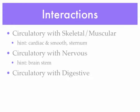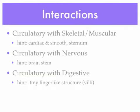Another interaction is the circulatory system with the digestive system — this should be a little bit of a review. Here's your hint: think about the tiny finger-like structures called villi. Capillaries surround your villi, and what the capillaries do is allow nutrients and energy to be absorbed into the bloodstream so the nutrients can be carried all around the body.